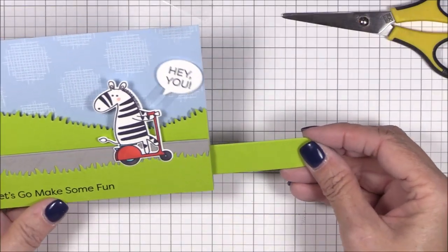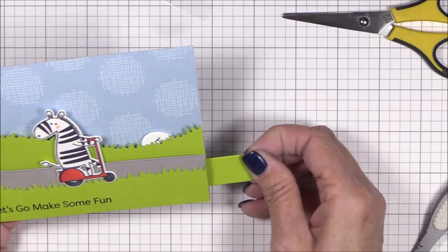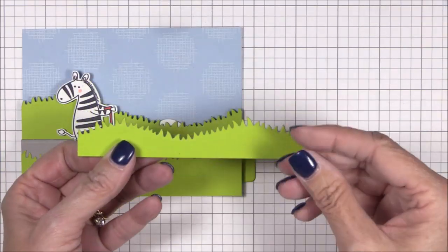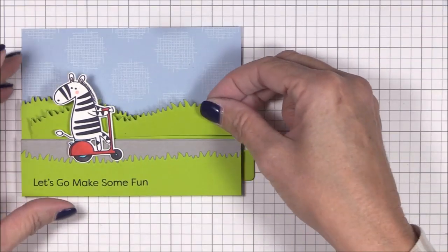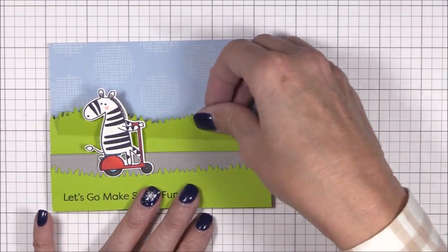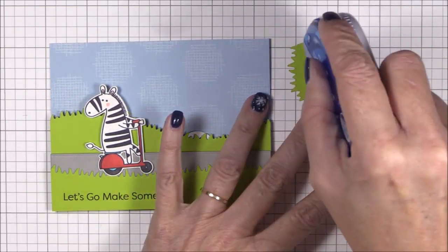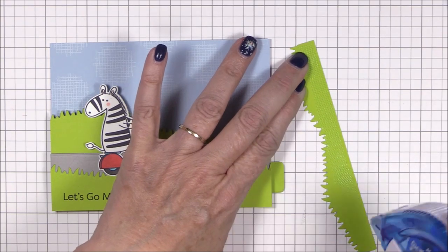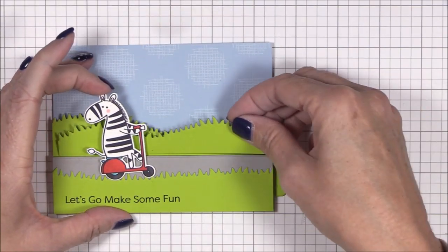But here's where I had a bit of a problem. It bugged me that I could still see part of the speech bubble peeking out behind the grass. So I die cut another grass strip to fit, making sure that it would cover the rogue speech bubble, and then I adhered it to the back grassy hill and behind the sidewalk with some tape runner adhesive. Problem solved!